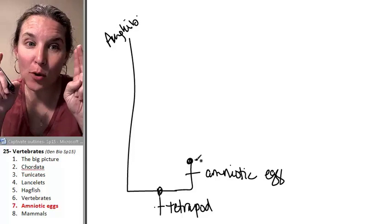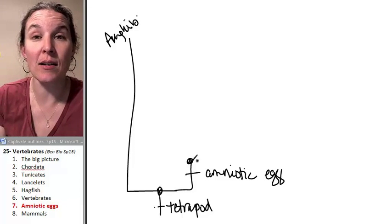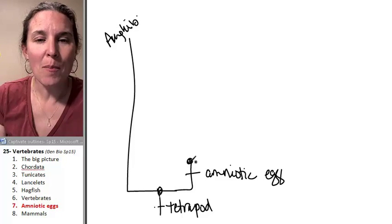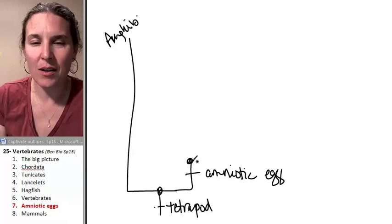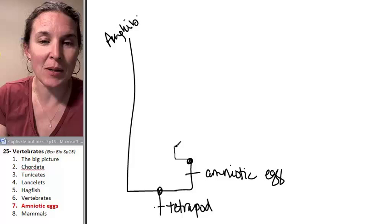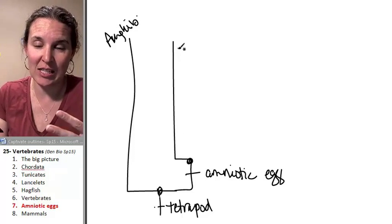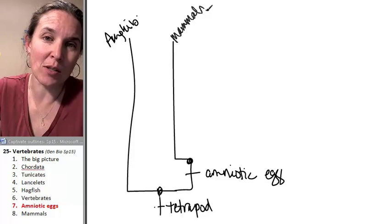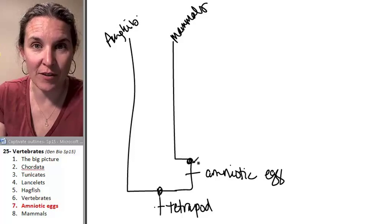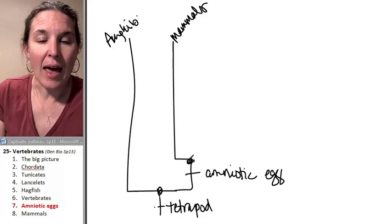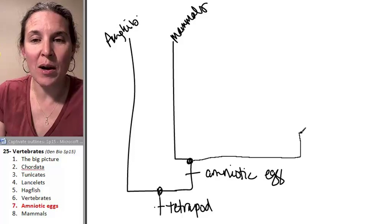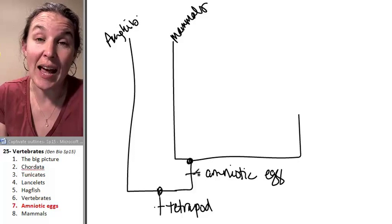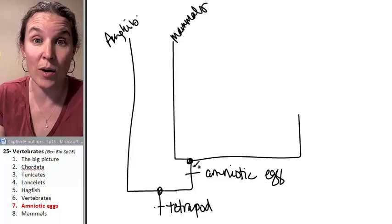The first people to get the amniotic egg is the reptiles. So we could say reptiles are coming up, but watch what I'm going to do to our cladogram. This is going to make you mad because we like to think of ourselves as mammals forever. I'm going to throw mammals here. Mammals are going to branch off of this tree, and watch what happens to my reptile group.